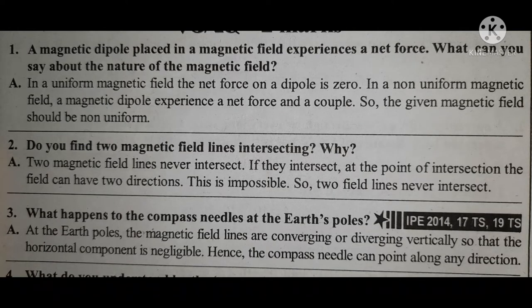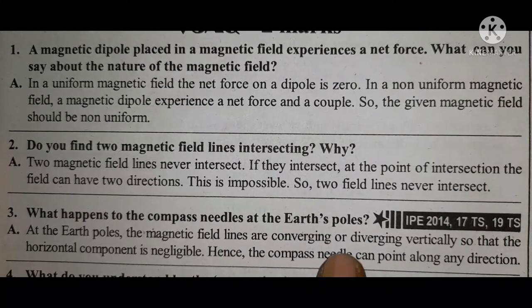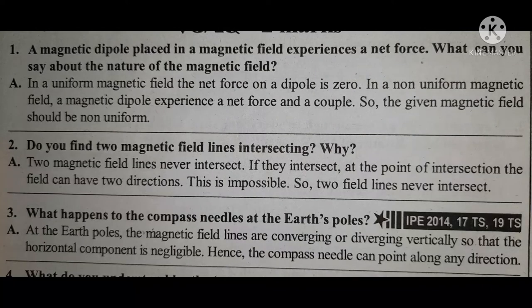Question three: What happens to the compass needle at the Earth's pole? If you take a magnetic compass, which shows north and south directions, and keep it near the Earth's pole, the magnetic field lines there are converging or diverging vertically. So the horizontal component is negligible, and hence the compass needle can point along any direction — it will keep rotating in any direction.